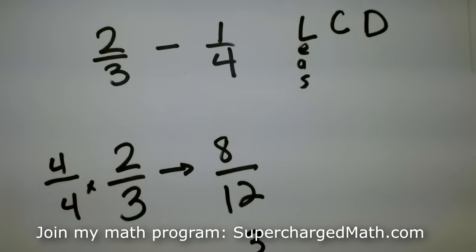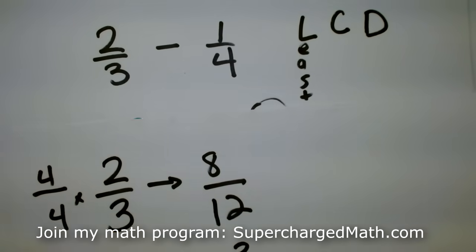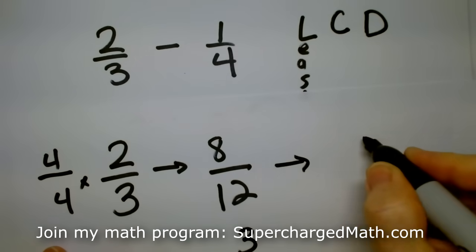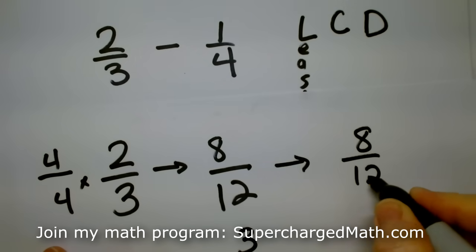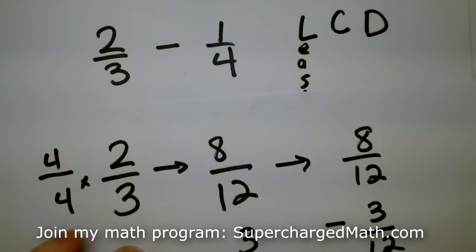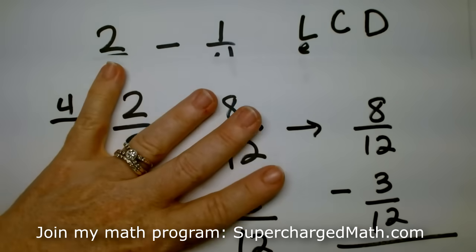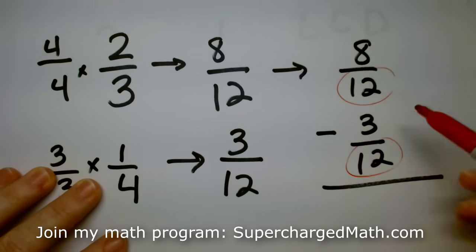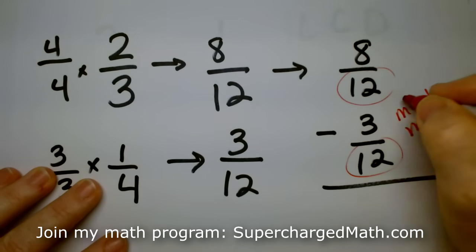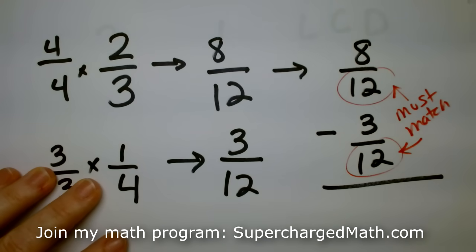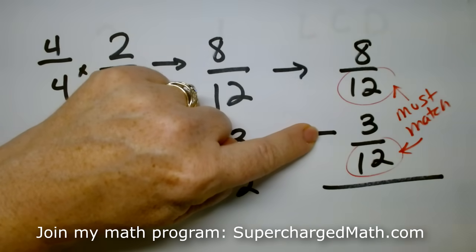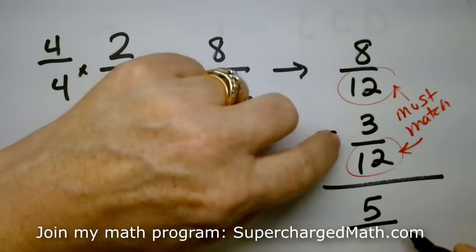So the original problem was two-thirds minus a quarter. So this is going to be eight over twelve minus three over twelve. Do you see how the bottoms match now? Do you see how the bottoms match? So these must match. And if they don't, you have to scale one or both of them up. We scaled both. And then you just do whatever you need to do to the top. This is an eight minus a three.